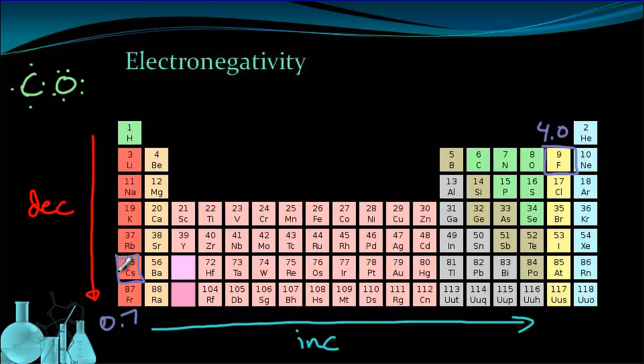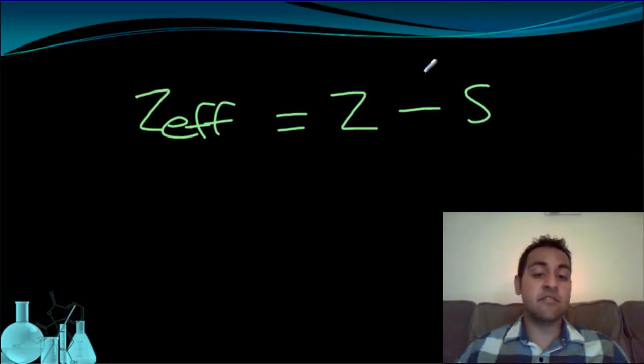As you get to much larger atoms down here, the nucleus is just further away, so it can't pull as strongly. So we see a decrease in electronegativity. So this idea of Z-effective, if you can keep this in mind, will help you figure out any of the trends fairly easily without having to memorize them. You can just reason through why they are the way they are.